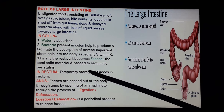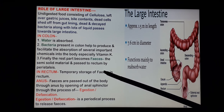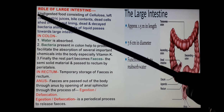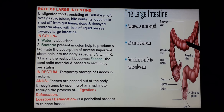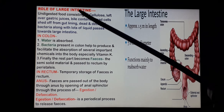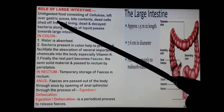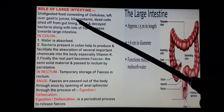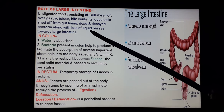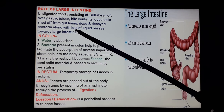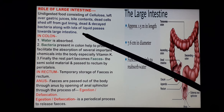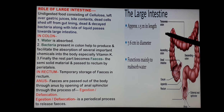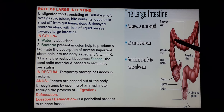After absorption and assimilation of nutrients have taken place, let's see what happens to the rest of the undigested food. This undigested food moves from the ileum towards the large intestine and reaches the colon. It contains cellulose, leftover gastric juices, bile contents, dead cells of the inner lining of the alimentary canal, dead and decaying bacteria, and a lot of water and fluids. Throughout the colon, a lot of water is absorbed from this undigested waste.